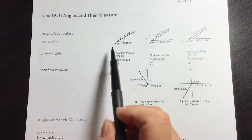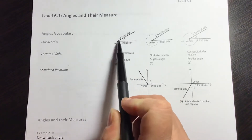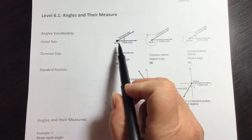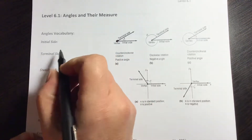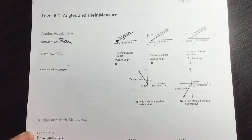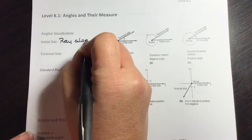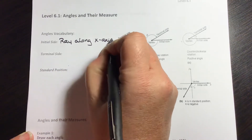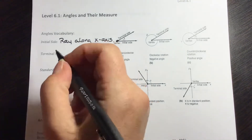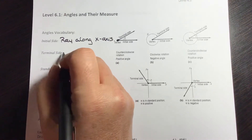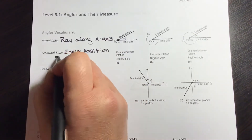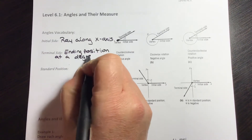When we talk about an angle, remember an angle is two rays adjoined at a common point, which is a vertex. The initial side of the angle is going to be our base — it's the ray along the x-axis — and the terminal side is the side that opens up to the degree measure, so it's the ending position at that degree measure.